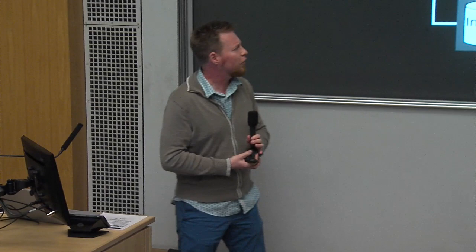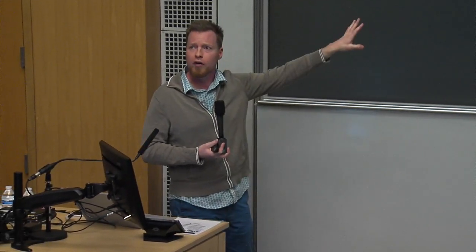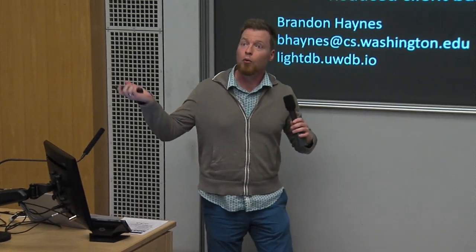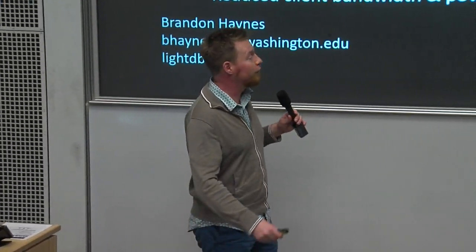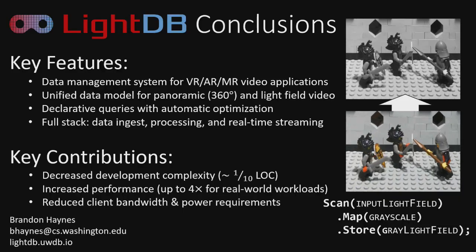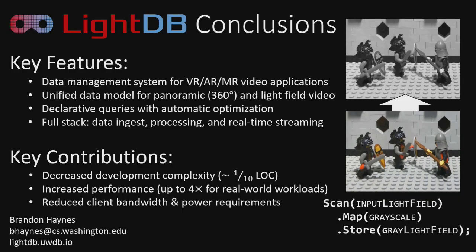The architecture of LightDB is a straightforward data management system. We have a planner that converts logical plans to physical execution plans, an optimizer drawing from a rich set of physical operators targeting various hardware, and a storage manager that achieves considerable compression for stored videos. To summarize: LightDB is a data management system for virtual, augmented, and mixed reality videos offering smaller declarative programs, free optimization, and more efficient execution than state-of-the-art. Thanks for listening.